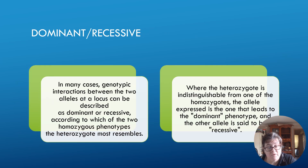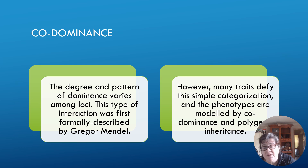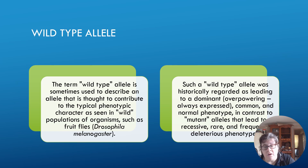In many cases, interactions between alleles at a locus can be described as dominant or recessive, according to which homozygous phenotype the heterozygous most resembles. Where the heterozygous is indistinguishable from one of the homozygous forms, that allele is expressed as the dominant phenotype and the other is said to be recessive. This type of interaction was first described by Gregor Mendel. However, many traits defy this simple characterization, because nothing in nature is simple — phenotypes are often modeled by co-dominance and polygenic inheritance.